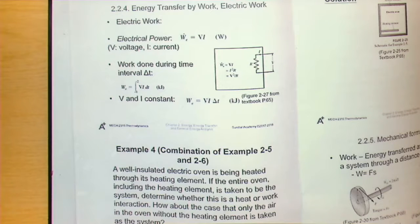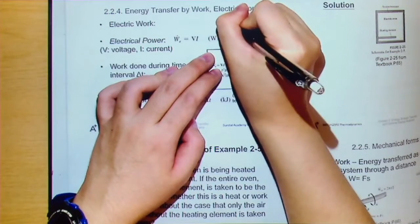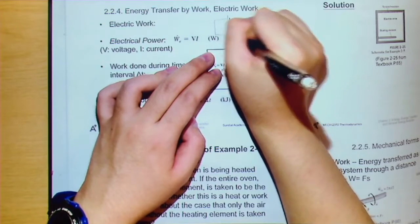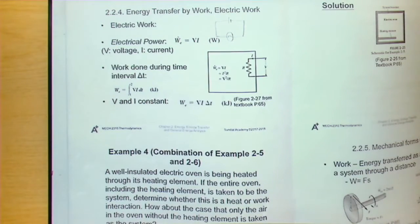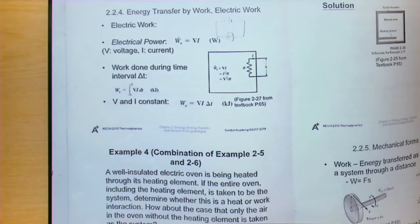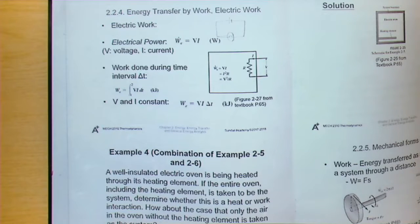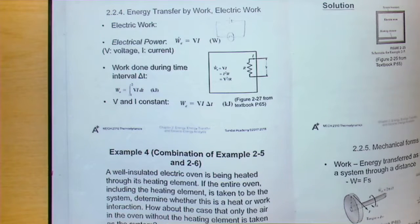Suppose you have a light bulb connected to dry cells by wires — a simple circuit familiar from high school. The dry cell provides electromotive force, establishing an electric field. Electrons inside the wires are accelerated by this electric field, flow through the wire, and light up the bulb. A force is exerted on the electrons and they move through a distance — this constitutes work done on the electrons, called electrical work, which generalizes to all kinds of charge carriers.